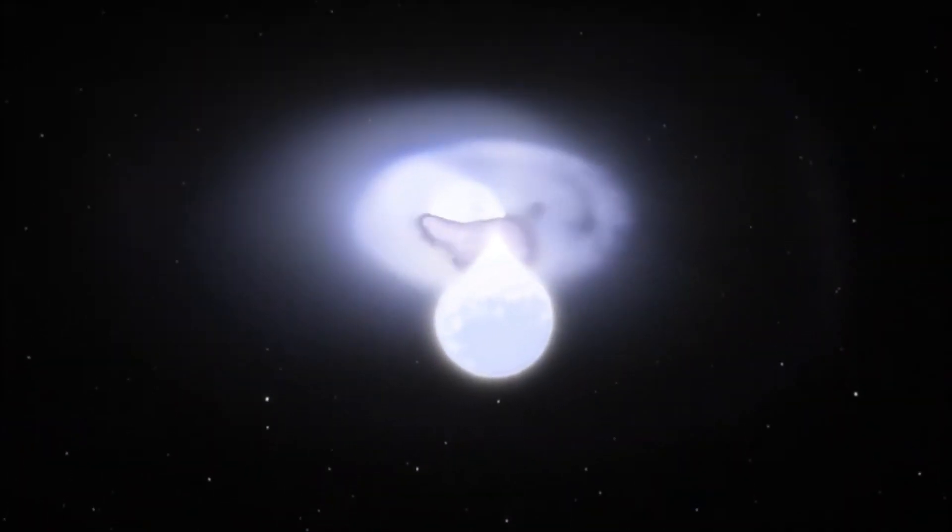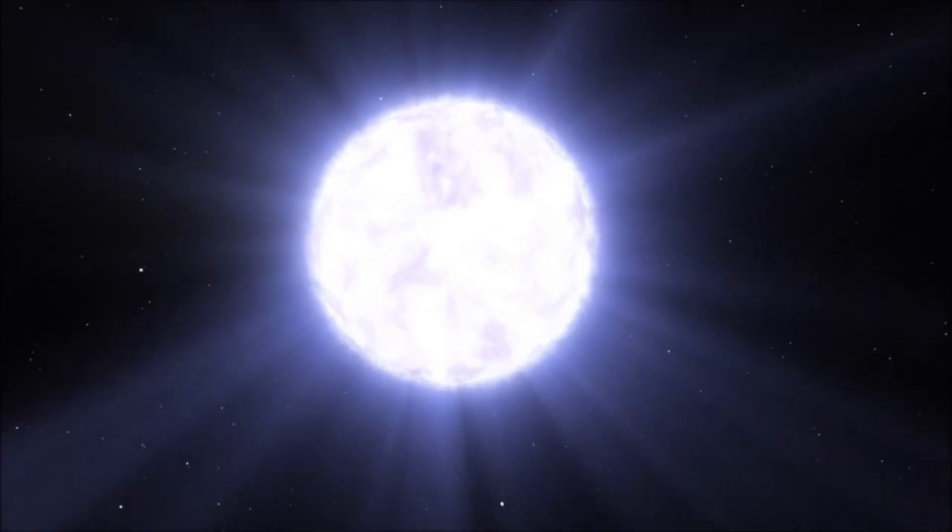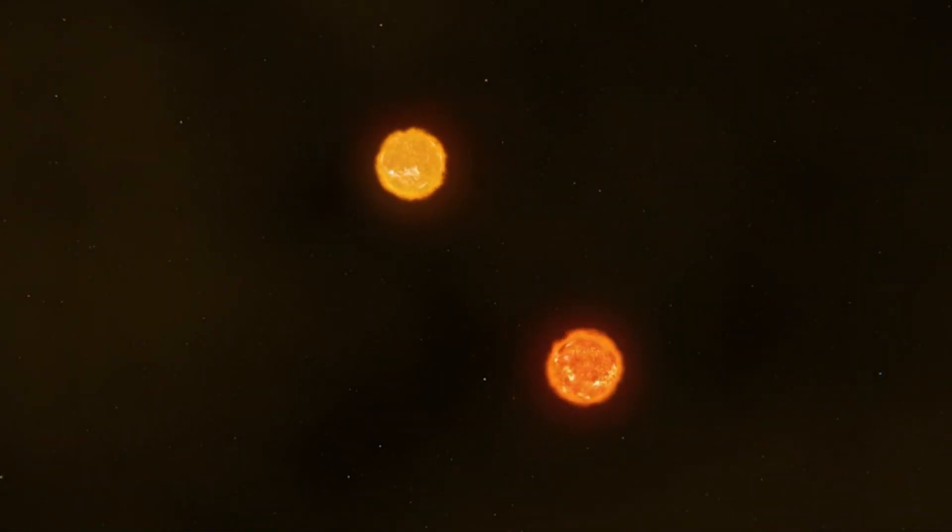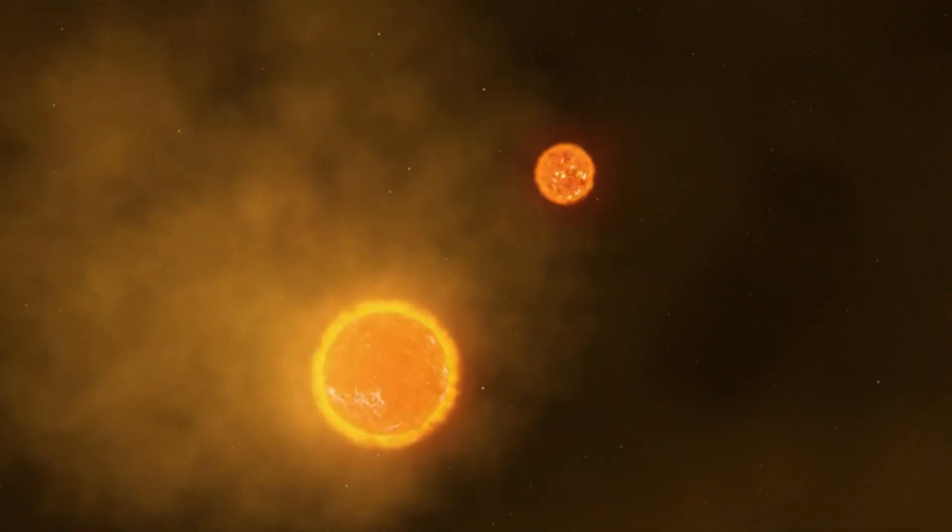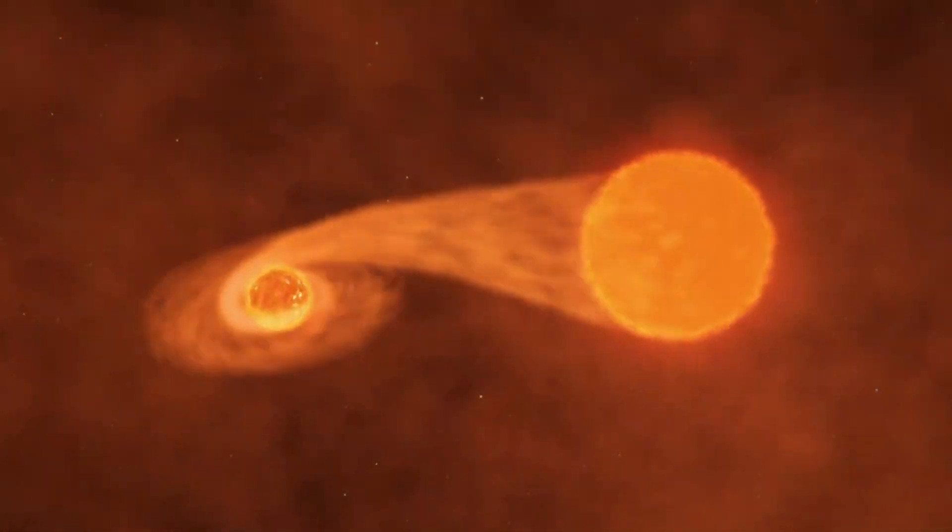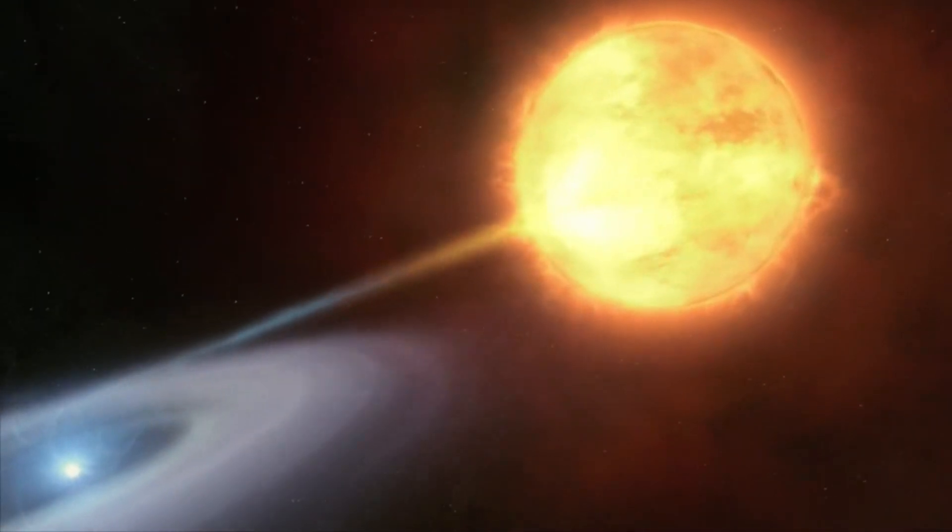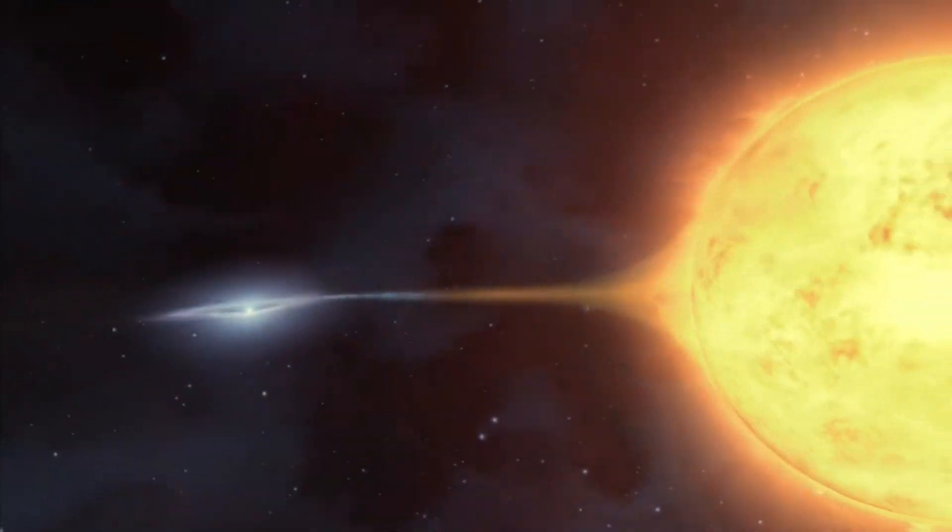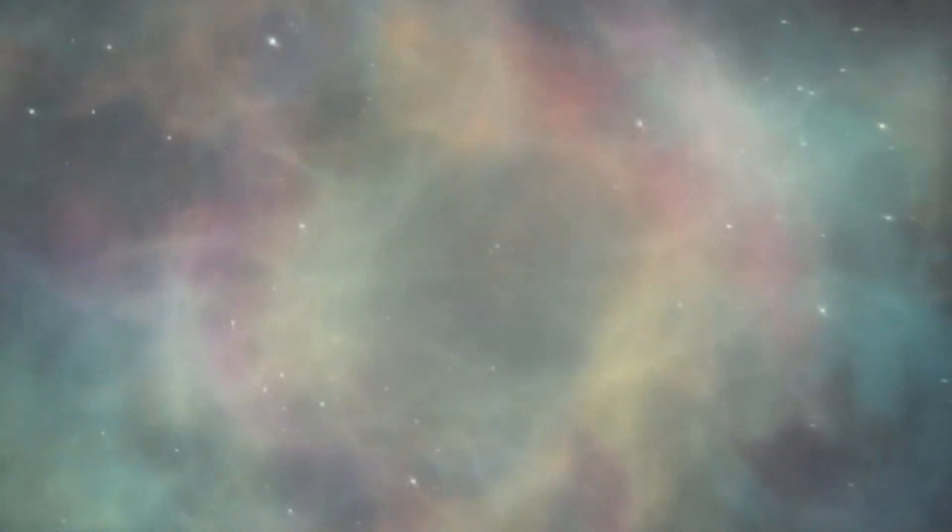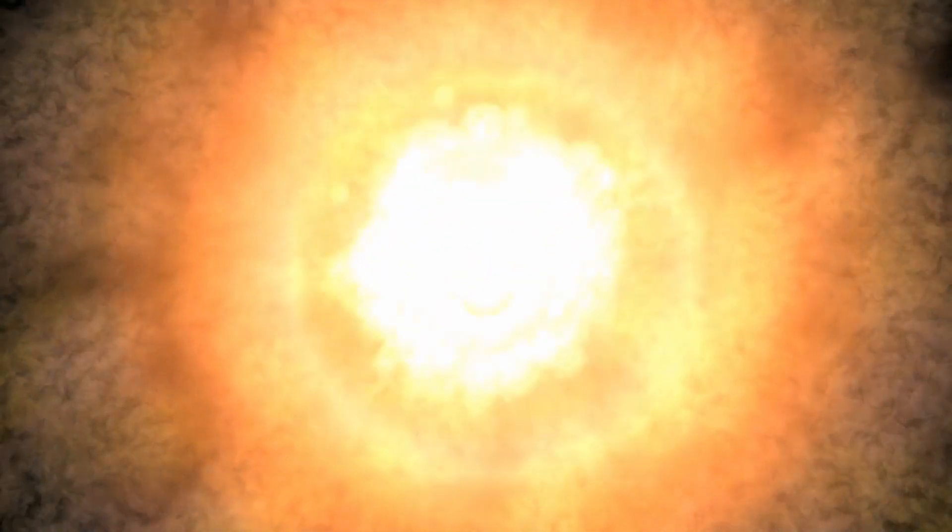Supernovae are also the main source of heavy elements in the universe. As these stars collapse, they generate a shockwave that can trigger fusion reactions in the star's outermost shell. These reactions then produce new atomic nuclei, a process known as nucleosynthesis. When a star goes supernova, the elements forged through this process are distributed throughout space.